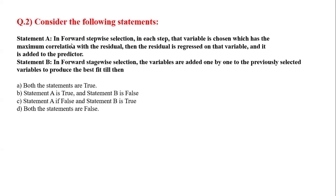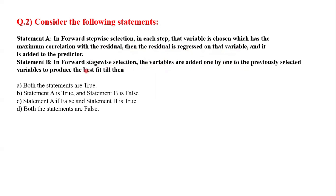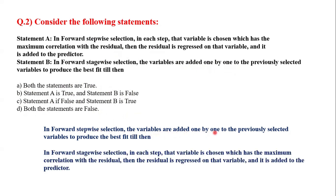Coming to question number two — consider the following statements. Statement A: in forward stepwise selection, in each step the variable chosen has the maximum correlation with the residual, then the residual is replaced on that variable and it is added to the predictor. Statement B: in forward stagewise selection, variables are added one by one to the previously selected variables to produce the best fit. We need to know that in forward stepwise selection, variables are added one by one (step by step), whereas in forward stagewise selection, the variable is chosen by maximum correlation with the residual. The statements have the descriptions swapped — so both statements are false.